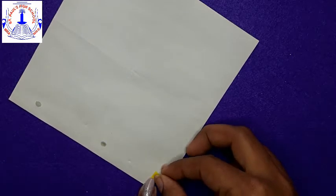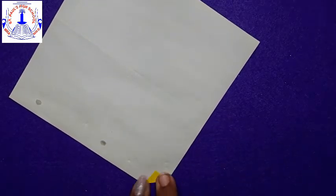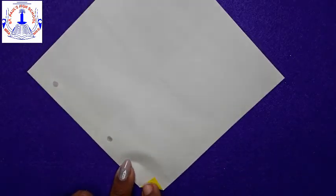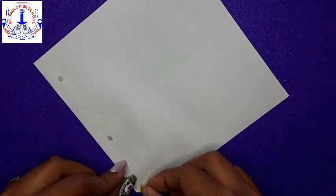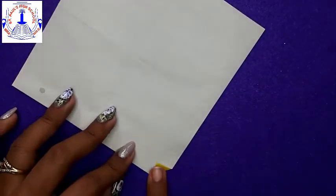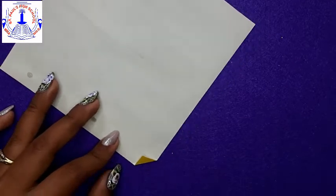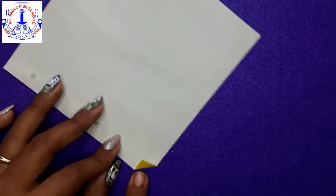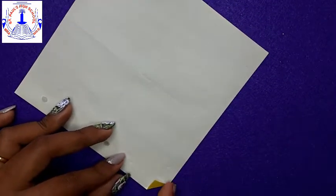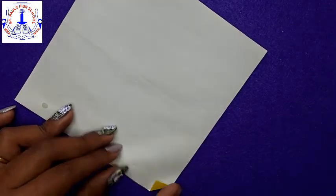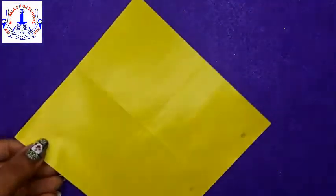See, fold it this way. Like a small triangle. Okay. Fold it this way. Small triangle. Then again, flip your paper towards the other side.